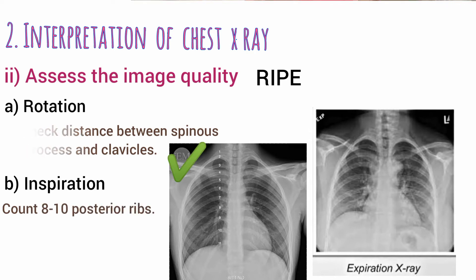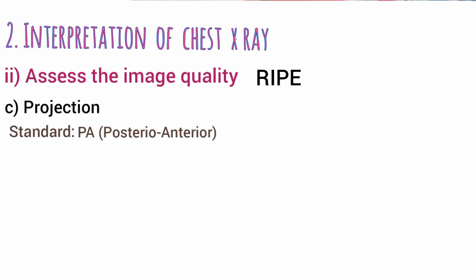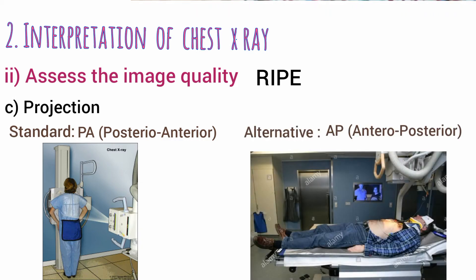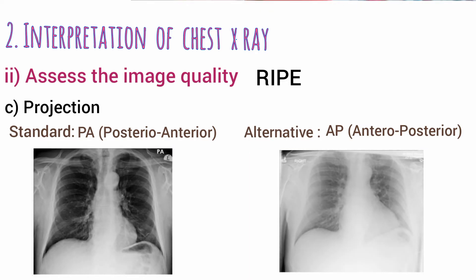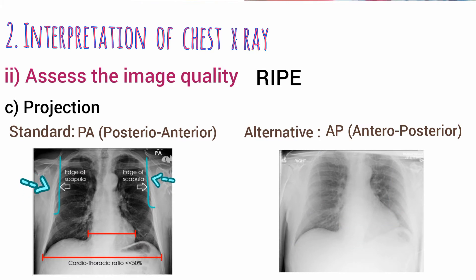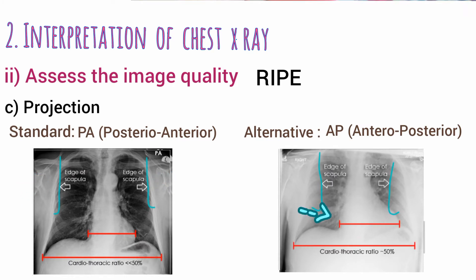The standard projection is the PA view, where the patient is standing with the x-ray beam passing from posterior to anterior. When the patient is not well enough to stand, an AP view is used, where the beam passes from anterior to posterior. X-rays are often labeled PA or AP, but if unsure, look at the medial edges of the scapula — if projected over each lung it is AP view, if not projected it is PA.